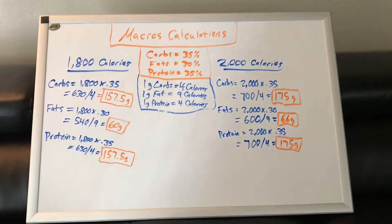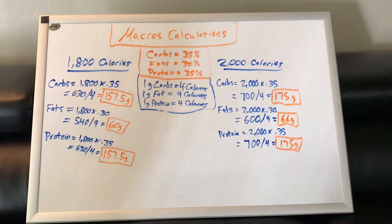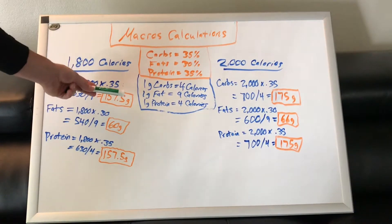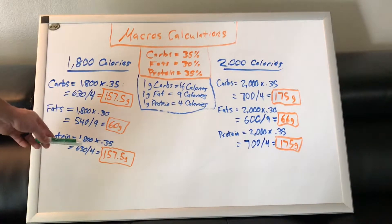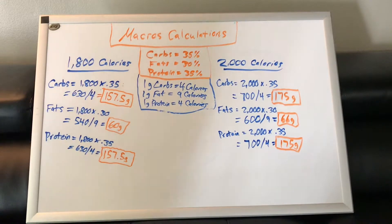So protein down here, 1,800 calories times 0.35, which is 35%, that's going to give us 630 calories. And then since 1 gram of protein equals 4 calories, we're going to divide that by 4, and that's going to give us 157.5 grams of protein per day. You could honestly just round that up to 160 grams per day on that one.